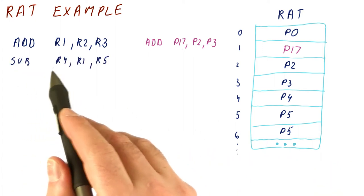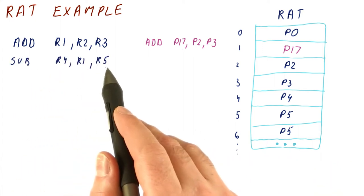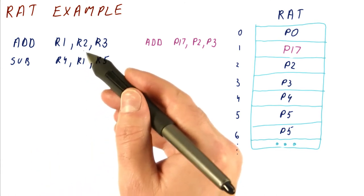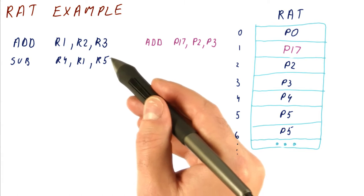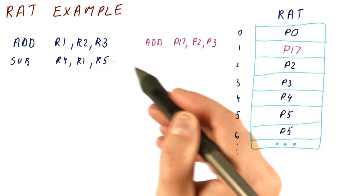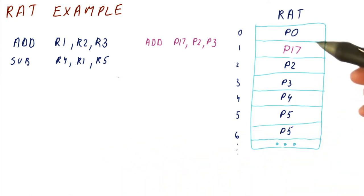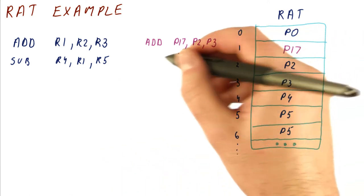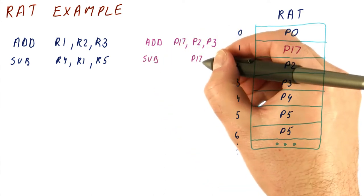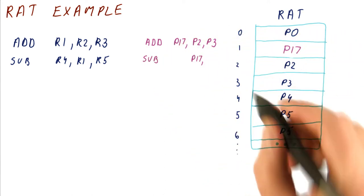Let's say that the next instruction is subtract R1 and R5 and put the result in R4. What the processor again will do is, it always follows the same procedure. Look at the RAT for R1 and R5 to see where those values currently are, and then rename them. So we're going to look at R1, and it says P17. So this subtract is renamed into read P17 and P5.